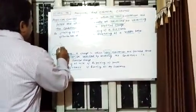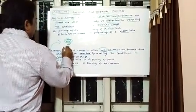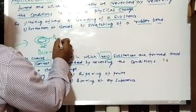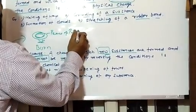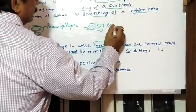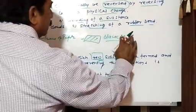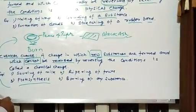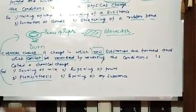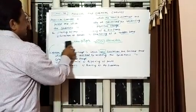If you take anything and burn it — like a piece of paper — once it gets burned, it becomes black ash. And if you want to get the piece of paper back, it is not possible. We have so many examples for chemical changes. Like digestion of food — in case of digestion, once food gets digested, it cannot go back to its original position.